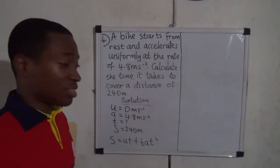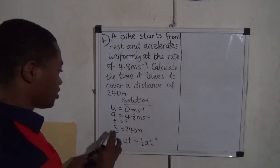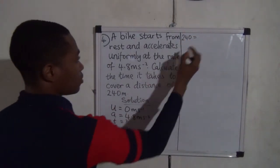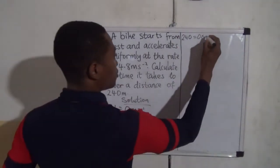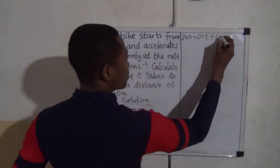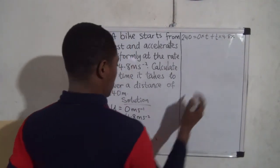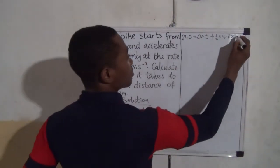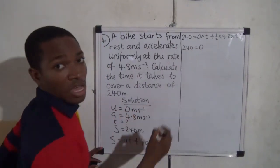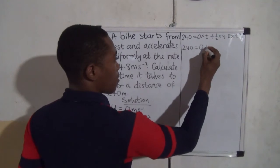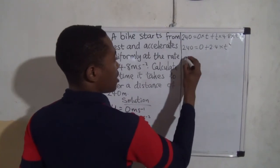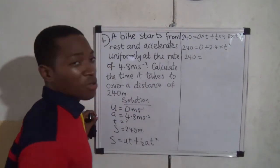If you got that equation, you've done the right thing. Let's substitute. s = 240, so 240 = ut + ½at². u is zero, so 0 multiplied by t is 0. Then plus half of 4.8, which gives us 2.4, multiplied by t squared. So we have: 240 = 0 + 2.4t².